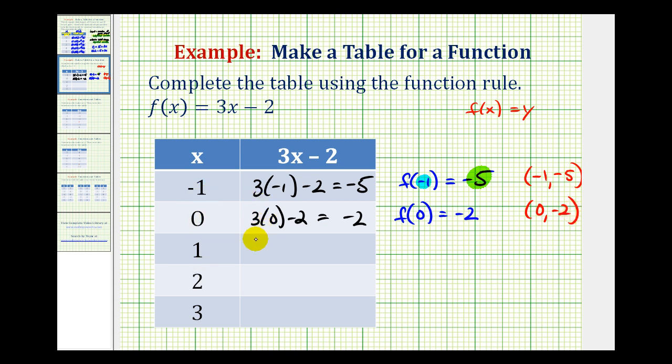And x = 1. The function value would be 3 times 1 minus 2. This is 3 minus 2, so that's equal to 1. So we have f(1) = 1. So the graph of the function would contain the point (1, 1).